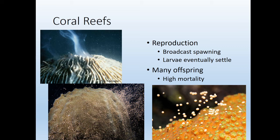Corals reproduce by broadcast spawning — releasing sperm and eggs into the water. Most are hermaphroditic, releasing both, but the eggs won't recognize sperm from the same individual. Sperm and eggs unite in the water, and larvae become meroplankton for a while before settling onto rocky sediments or dead coral to start a colony. They have millions of babies but extremely high mortality, so they need to produce a lot of larvae for any chance of new coral growth.